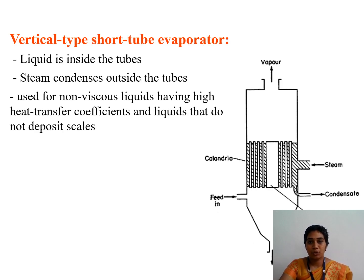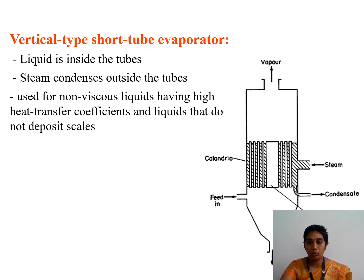Next is the vertical type short tube evaporator. The length of the tube is very short. Steam is passed outside the tubes and the food material is passed inside the tubes. As you can see in the figure, the feed enters here and then moves over the tubes. Steam flows over the tubes and finally the product is collected at the outlet.